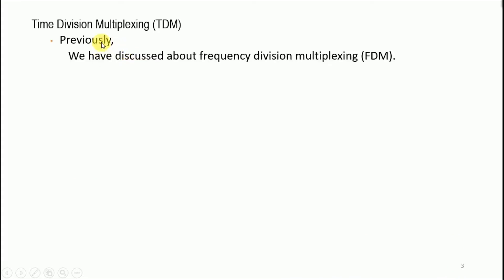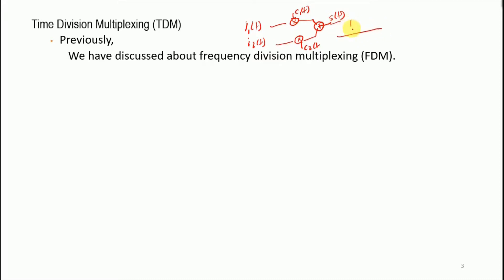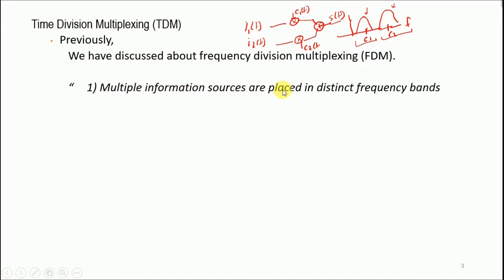Previously we discussed frequency division multiplexing. If we have two information messages i1(t) and i2(t), we multiply each with a different carrier — carrier one and carrier two — then sum them and send over a channel. In the frequency domain, i1 occupies one band and i2 occupies another. For FDM, multiple information sources are placed in distinct frequency bands.